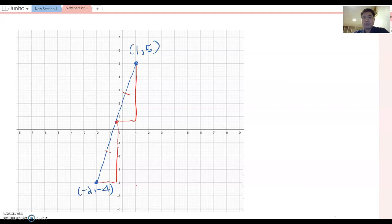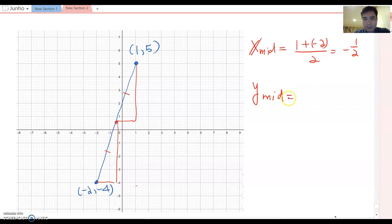So just using the average formula to find x coordinate and y coordinate. So for x mid, I can say 1 plus negative 2 over 2, so becomes negative 1 over 2. So y mid, I can say 5 plus negative 4 over 2, so becomes 1 over 2.